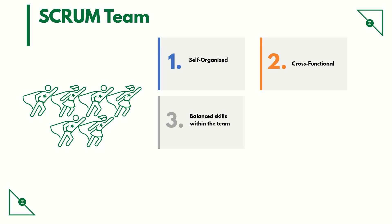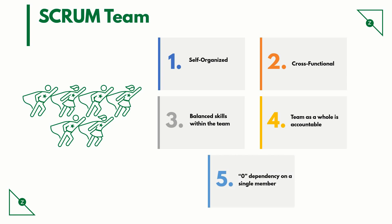Balance skills within the team — the team should have all the necessary skills to burn the backlog. Team as a whole is accountable: it is important that everyone has a mindset that the entire team is accountable for success or failure. If a member is lagging behind in their sprint commitment, others should voluntarily give a helping hand. There should be zero dependency on a single member — being cross-functional is one thing, but depending on one member for a particular skill set is another.